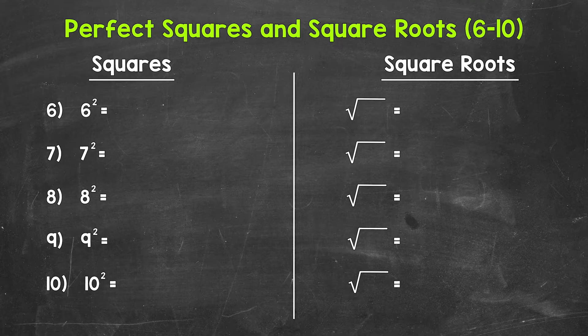Now remember, squaring a number means to multiply a number by itself. When it comes to square roots, square roots are the opposite — the inverse of squaring a number. So we need to think: what number multiplied by itself will equal the number under the root symbol?